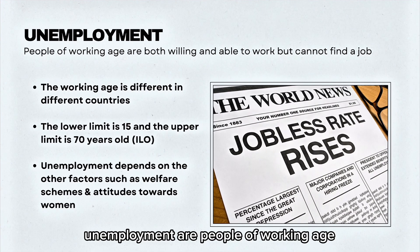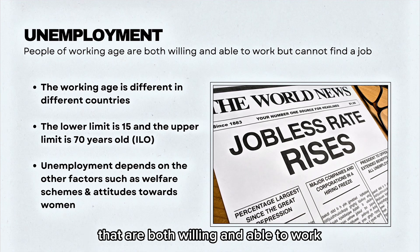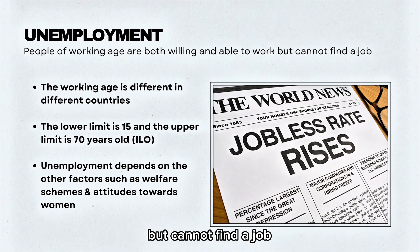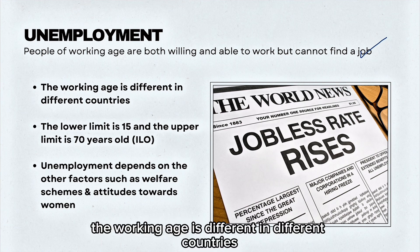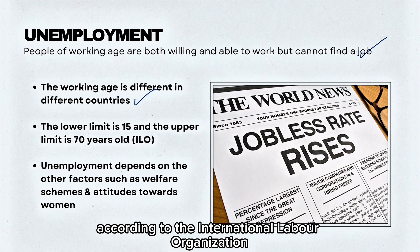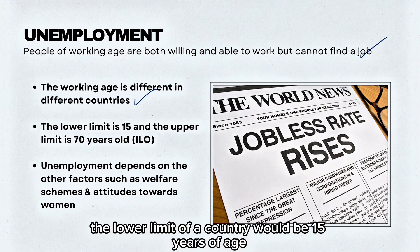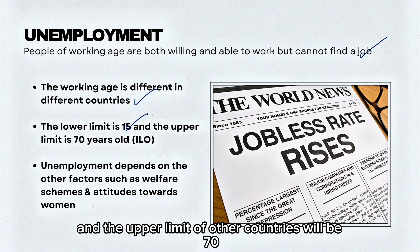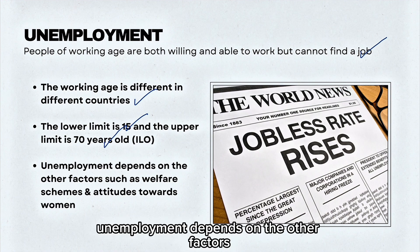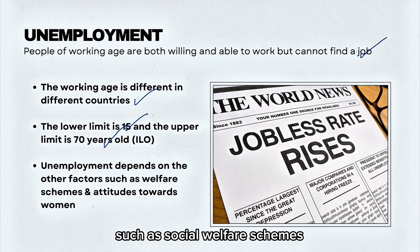Unemployment refers to people of working age that are both willing and able to work but cannot find a job. The working age is different in different countries. According to the International Labour Organization, the ILO, the lower limit would be 15 years of age and the upper limit 70 years of age. Unemployment also depends on other factors such as social welfare schemes and attitudes toward women.